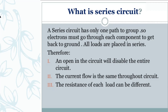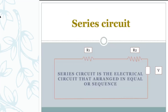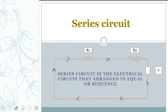Now I'll show you a series circuit diagram. Here we have R1 and R2 — resistance one and resistance two — and V, which means the voltmeter. In a series circuit, the current flows in one path only.